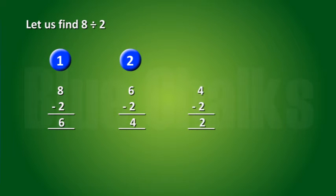4 minus 2 is equal to 2, equation 3. 2 minus 2 is equal to 0, equation 4.